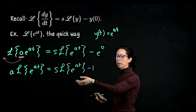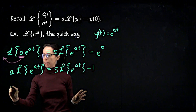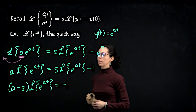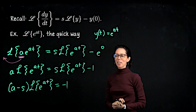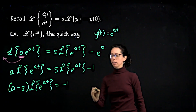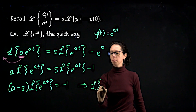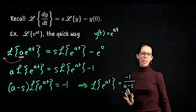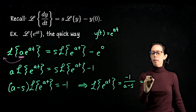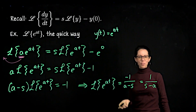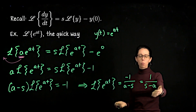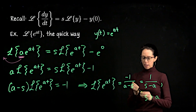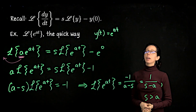Moving terms and factoring out the Laplace transform: a minus s times the Laplace transform of e to the at equals negative 1. Isolating, the Laplace transform of e to the at is negative 1 over a minus s, which is more naturally written as 1 over s minus a. The domain for s: when a equals 1, we needed s greater than 1, so for general a it should be s greater than a. This domain can be verified explicitly by reverting to the definition of the Laplace transform.